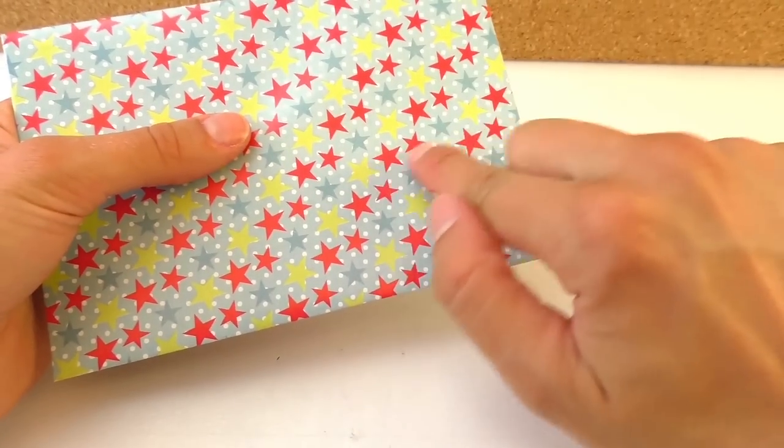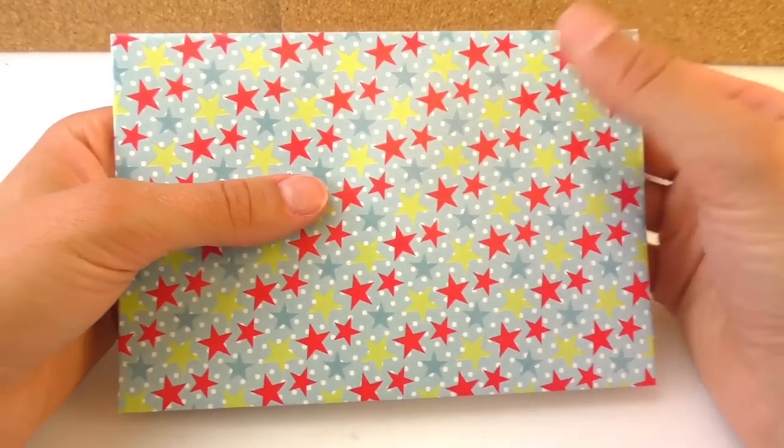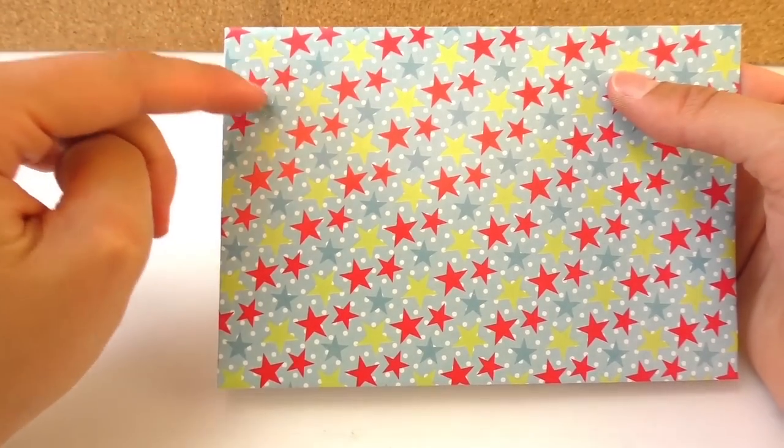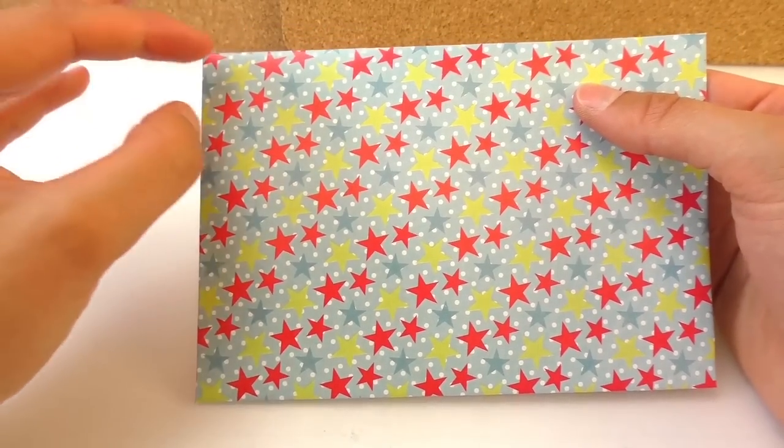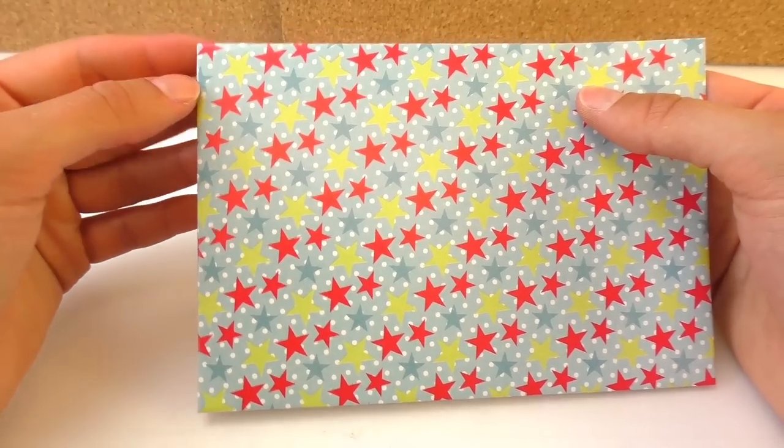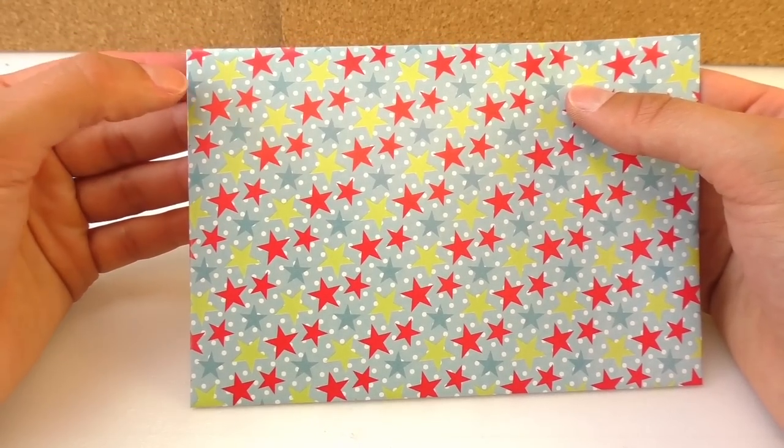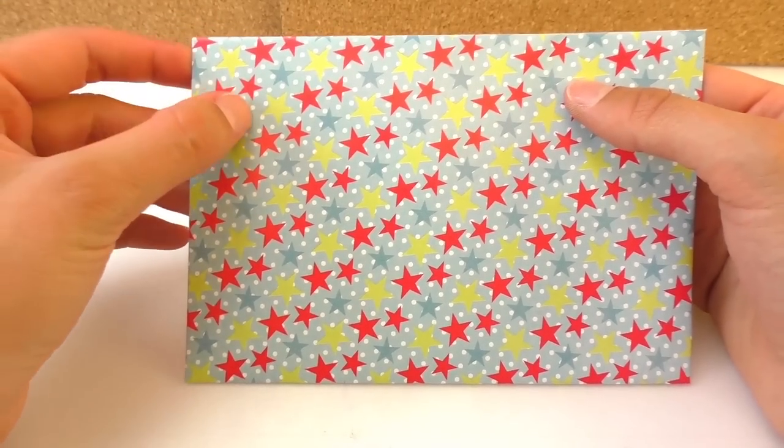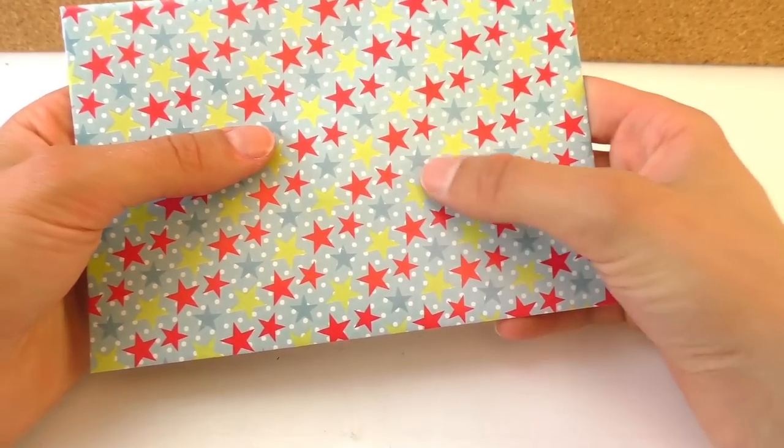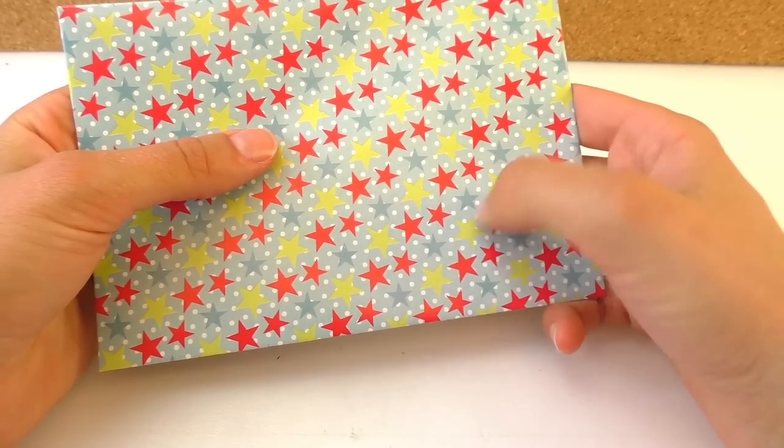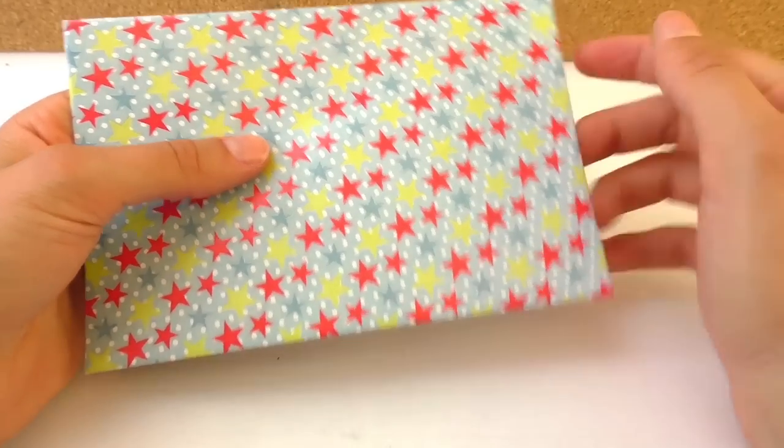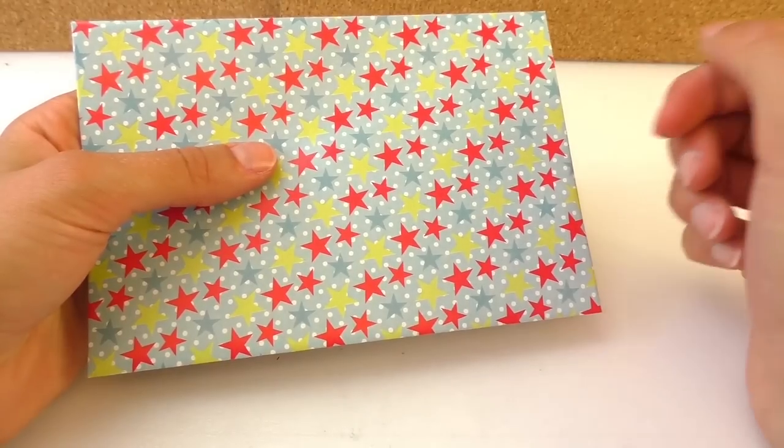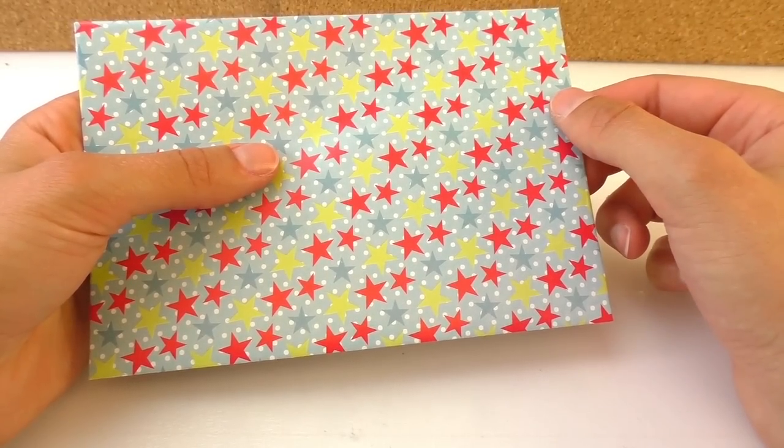So we can put here the stamp and below we write the address, the person that we're sending it to. And on the left we write our own address in case it gets sent back. So our own address goes here and then the person that we're sending it to goes right here. And remember to put state, city, zip code and everything. And the stamp goes at the top.